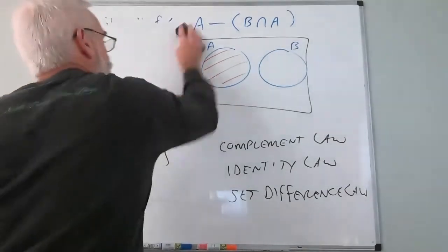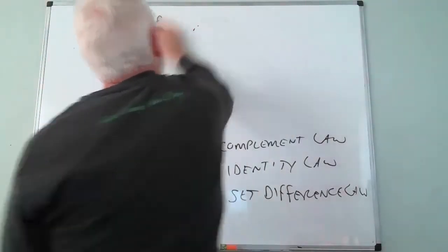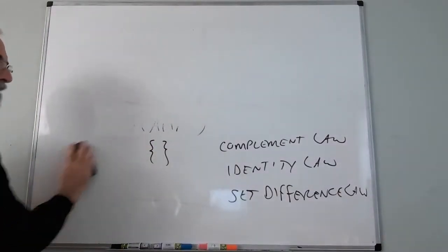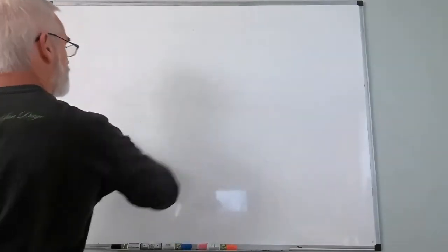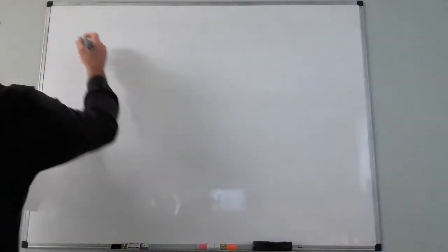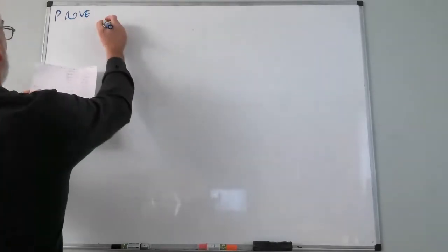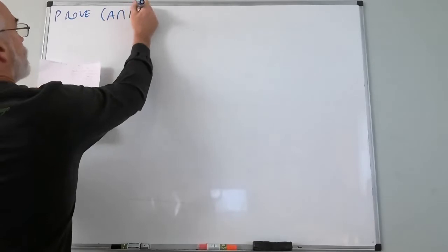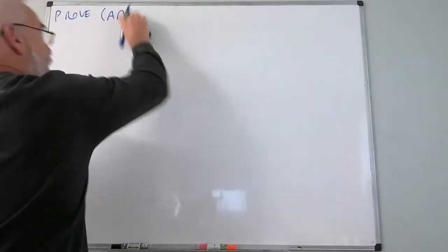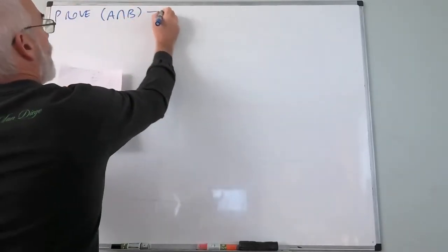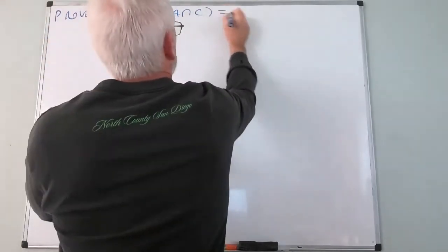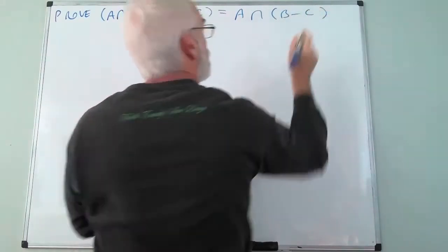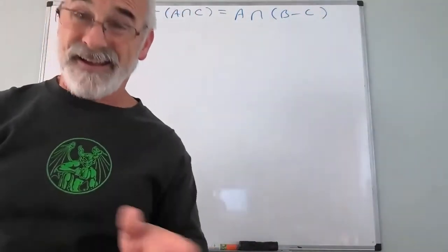Now let's do a longer proof. I want to prove that A∩B − A∩C = A∩(B − C). This time I want to start with a Venn diagram to make sure we agree on what we're working with. We have three sets, and we want them to intersect — though it's possible the intersection is empty; I just don't start by assuming that.